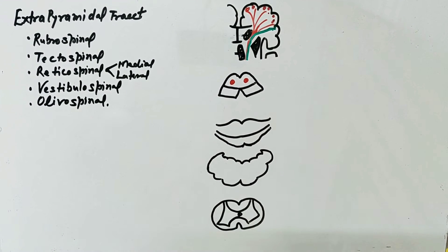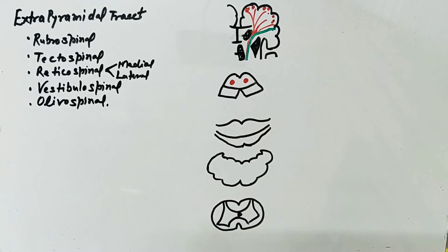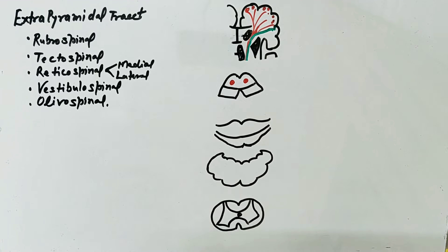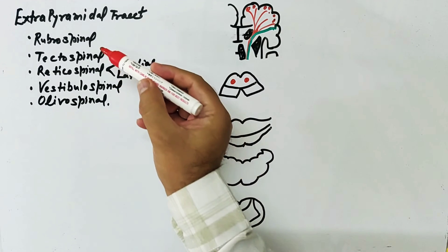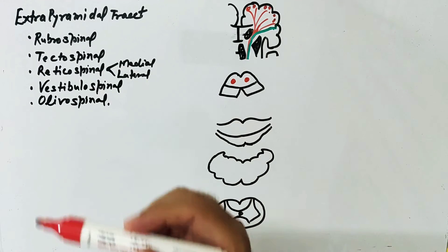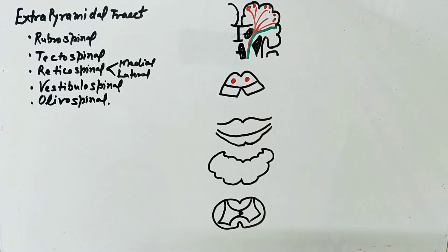Now we will discuss about the extrapyramidal tract — the descending tracts other than the pyramidal tract. As you know, the pyramidal tract passes through the pyramid of the medulla oblongata, and other tracts do not pass through the pyramid of the medulla oblongata. That is why these are known as extrapyramidal tracts. These are: rubrospinal tract, tectospinal tract, reticulospinal tract, vestibulospinal tract, and olivospinal tract.